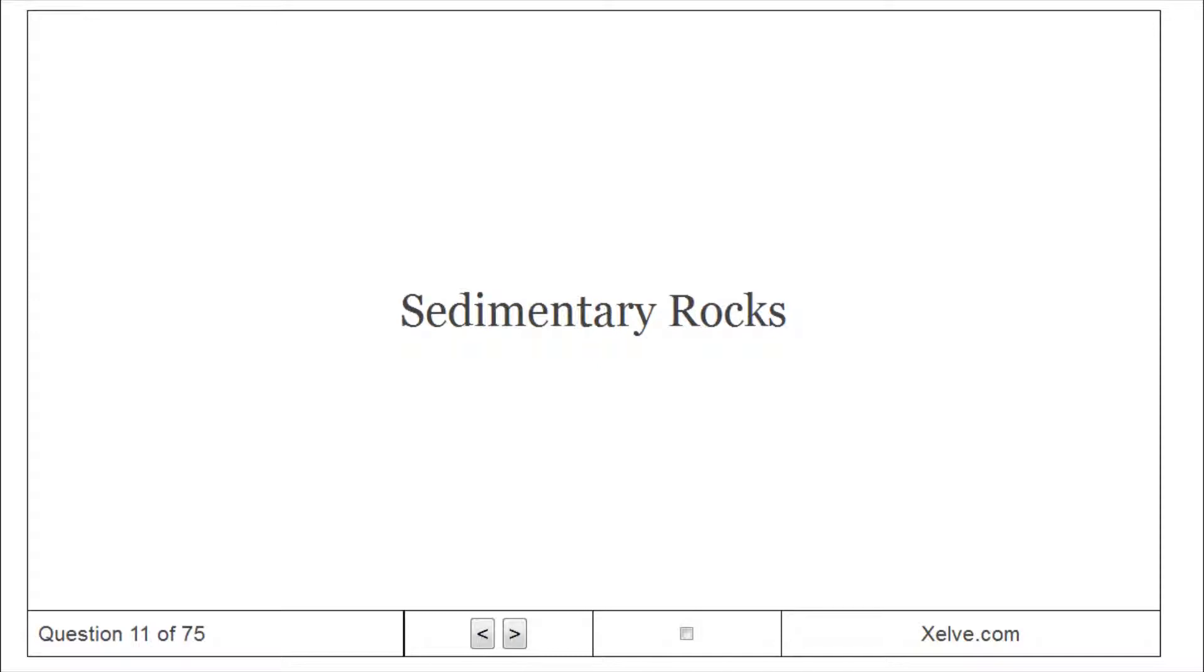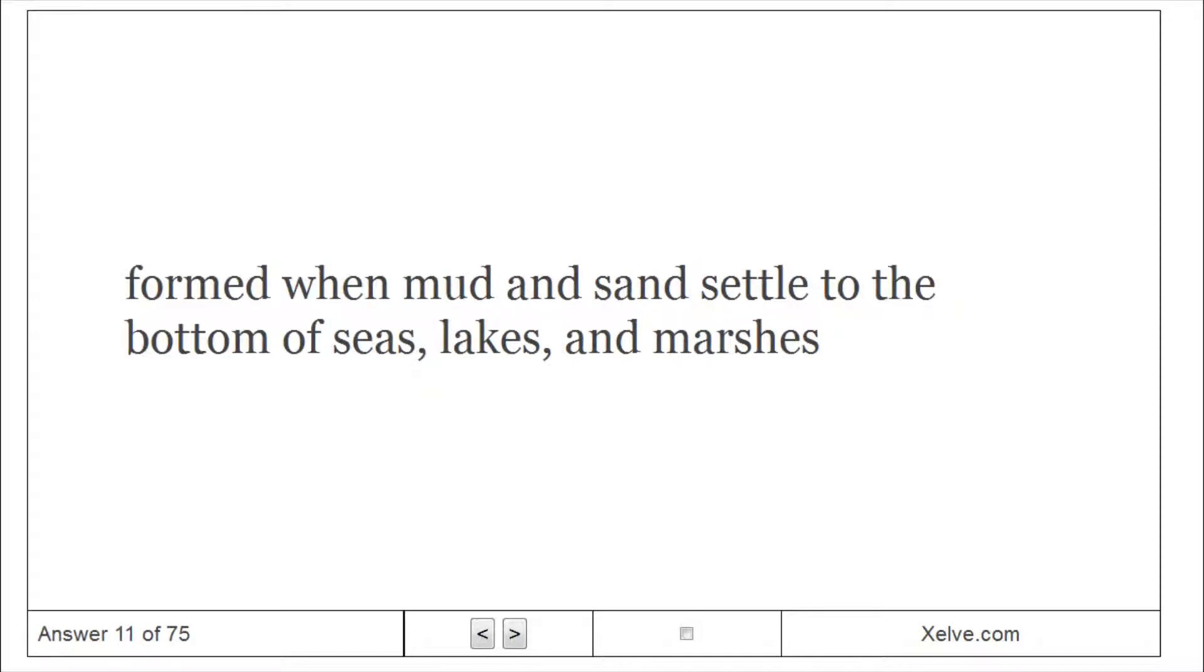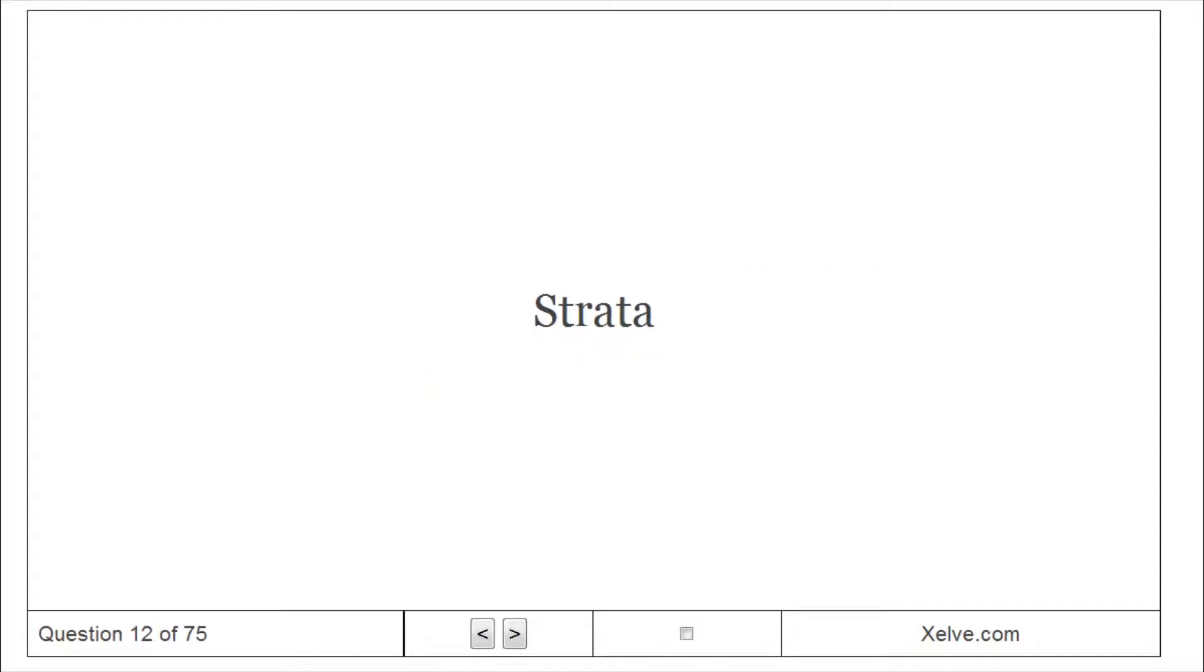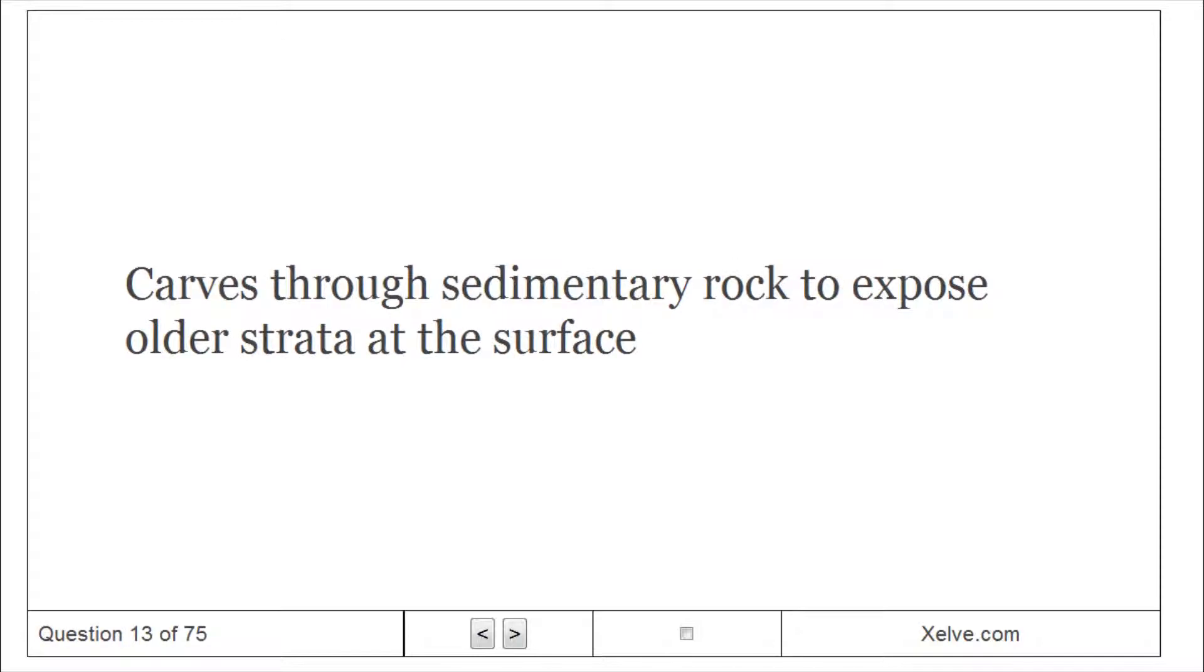Sedimentary Rocks: Formed when mud and sand settle to the bottom of seas, lakes, and marshes. Strata: Layers of rock carved through sedimentary rock to expose older strata at the surface.